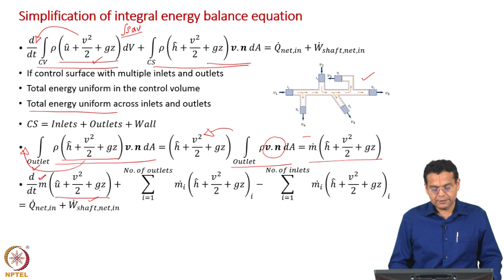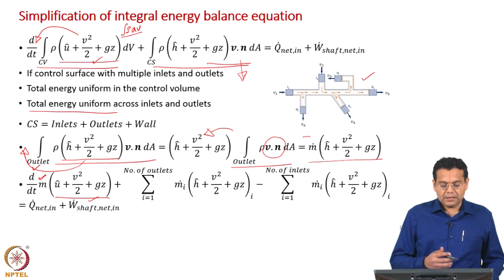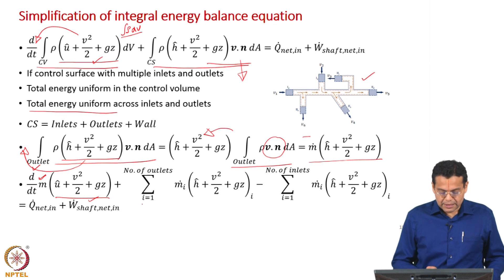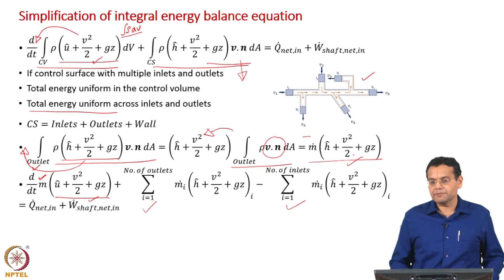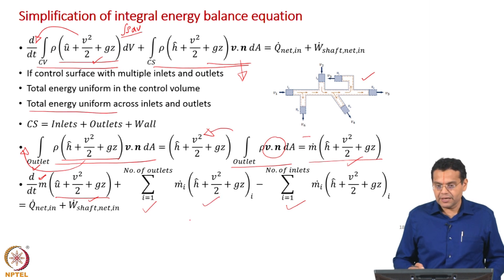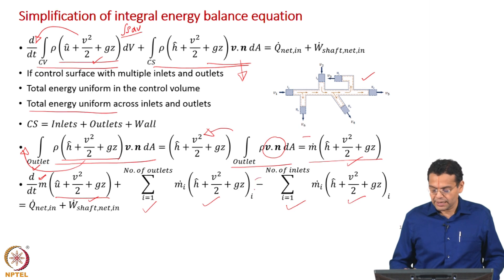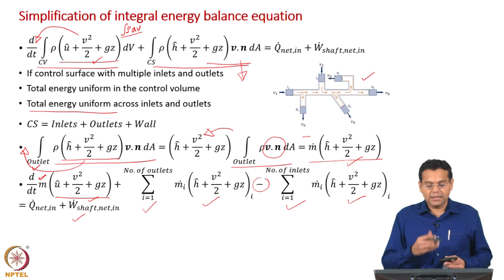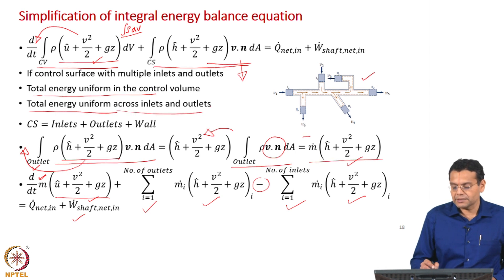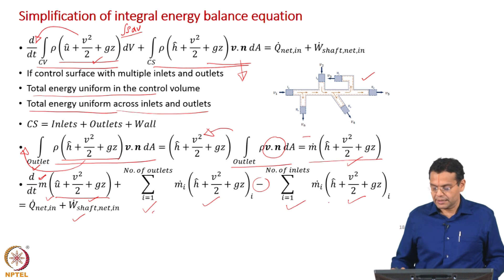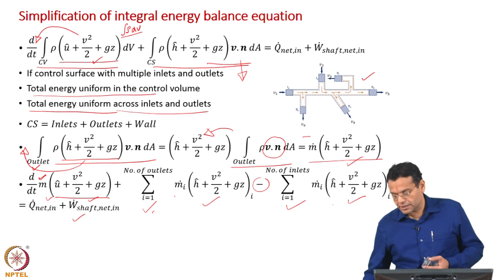We have d/dt of (mass × sum of energy terms). The convection term is expressed as a sum over outlets and inlets, simplified as ṁ times the sum of energies for every outlet i, and the corresponding inlet terms with the negative sign. The right hand side remains the same. The key simplification: total energy uniform in the control volume and across inlets/outlets, transient term simplified, convection term expressed as mass flow rate times sum of energies.